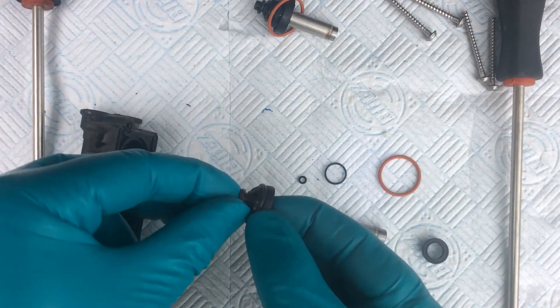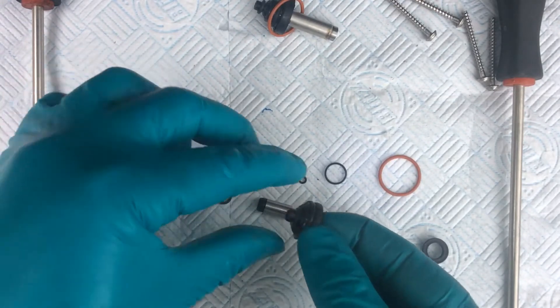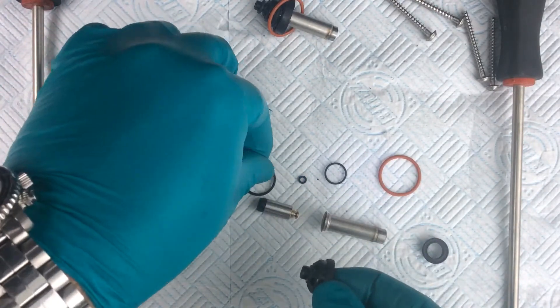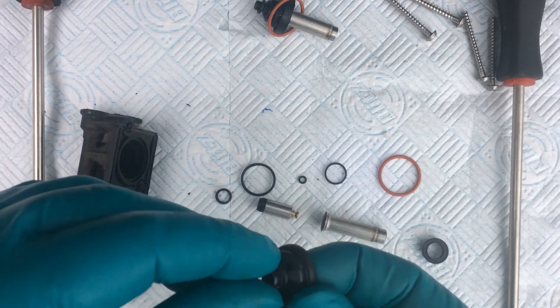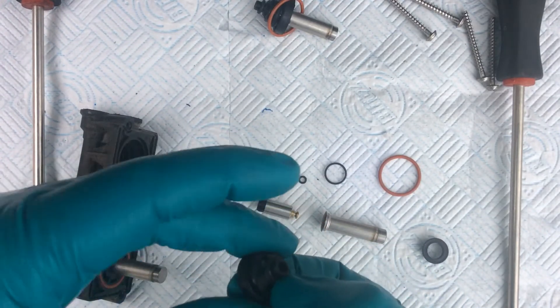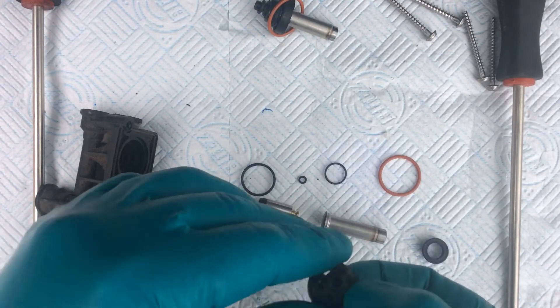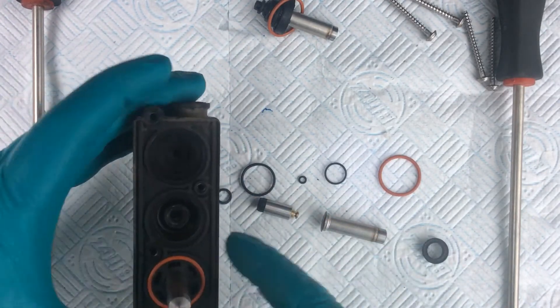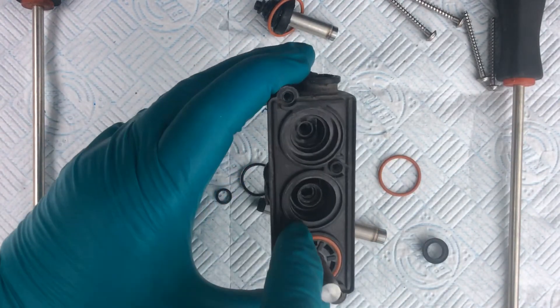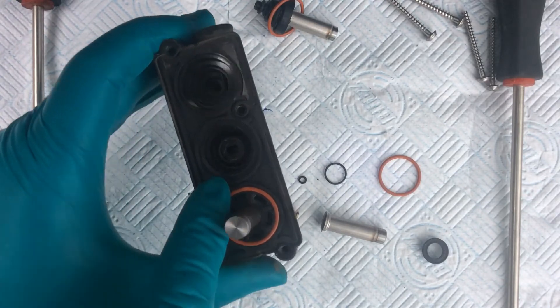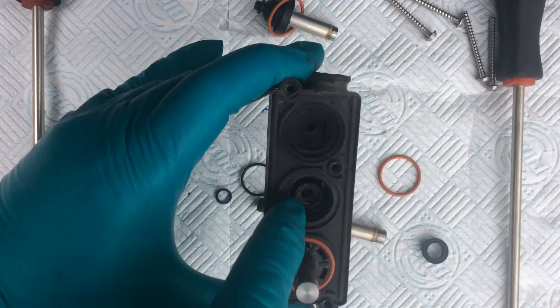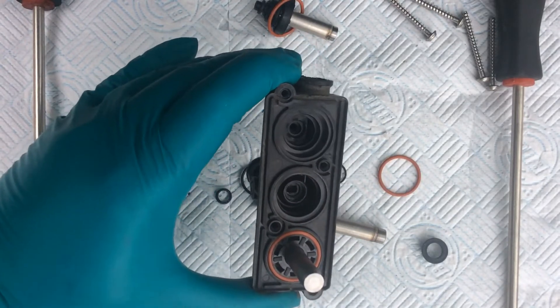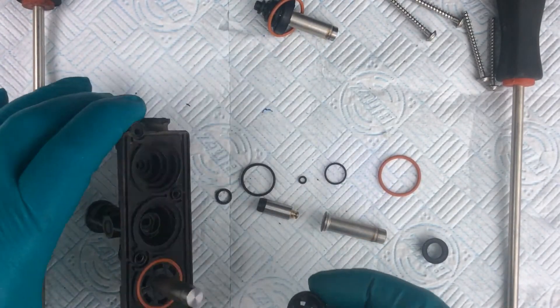So then we have two more seals there. We have a tiny one there and we have a bigger one just there. All those seals come in the kit that you get, as I say, off eBay. I'll try to put a link if I can find it, but the problem with eBay links is that they change so often. You can see that there is some residue inside here. That's come from a compressor that is breaking down internally.